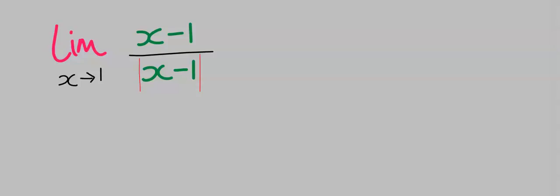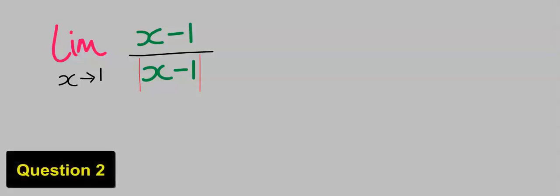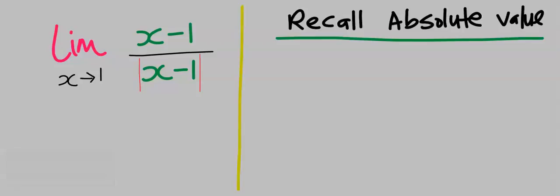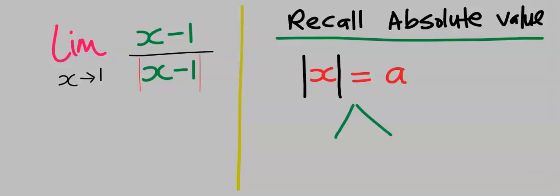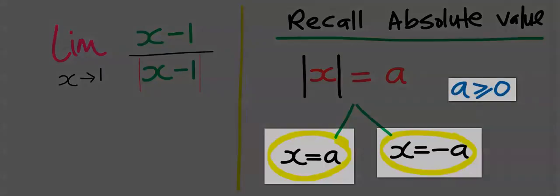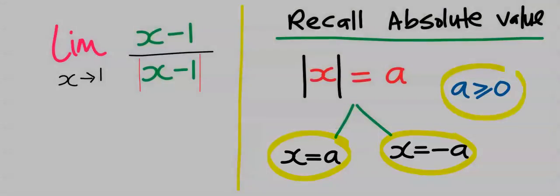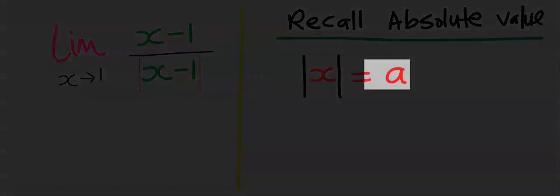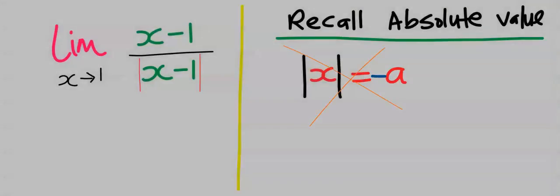Let's consider this question. We are going to check if this limit exists or if it does not exist. To solve this problem, let's recall some absolute value or modulus guiding rules. If the absolute value of x is equal to a, then we are going to have two answers: x is equal to a and x is equal to minus a. This is true only if the value of a is greater than or equal to 0. And if a should have a negative, then this function has no solution.